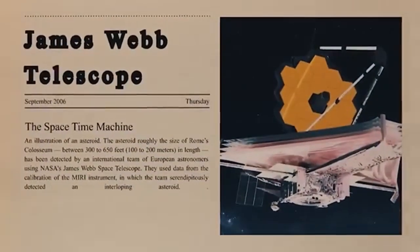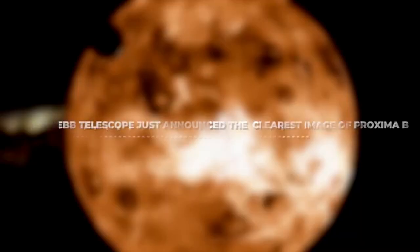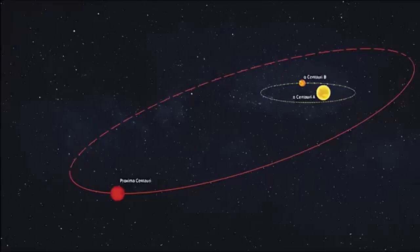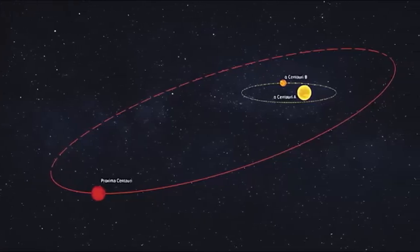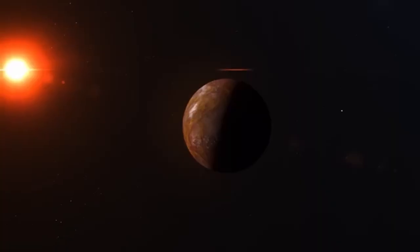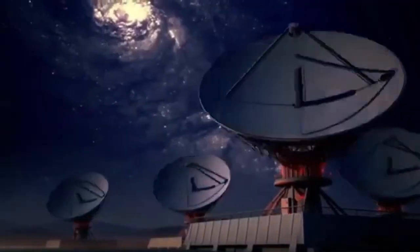The primary scientific goals of the JWST include studying the formation of galaxies, stars and planetary systems, as well as investigating the potential for life on planets outside our solar system, known as exoplanets. One of the JWST's key capabilities is its ability to analyze the atmospheres of exoplanets, providing insights into their composition and conditions. This capability is crucial for identifying planets that may harbor liquid water.